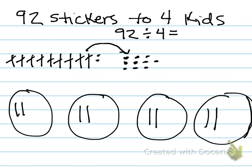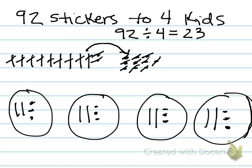Now I have plenty of ones to pass out to the groups. Let's cross them out and put one in each circle, cycling through all four groups repeatedly. Back at the beginning — I see I have perfectly four left. Cross each one out and put one in each circle. How many does each kid get? Well, 10, 20, 21, 22, 23. Each kid gets 23 stickers.